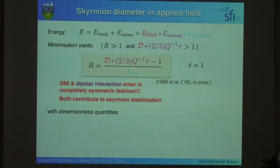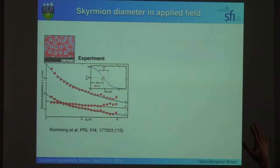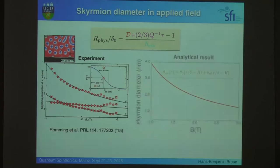Both dipole interactions and Dzyaloshinskii-Moriya interaction contribute to the skyrmion's stabilization. All the quantities that you have are dimensionless quantities. So this is the experiment in the Hamburg group, right, so they are small. So, the dipole interaction there is not negligible.